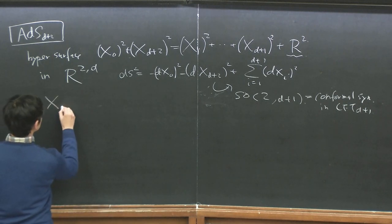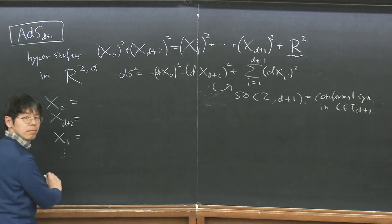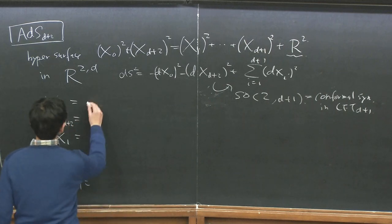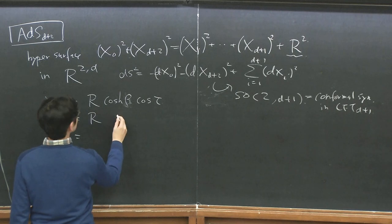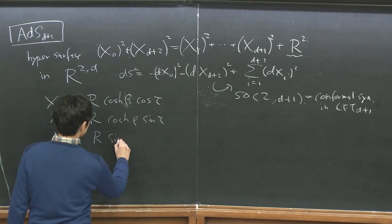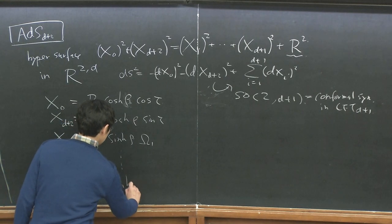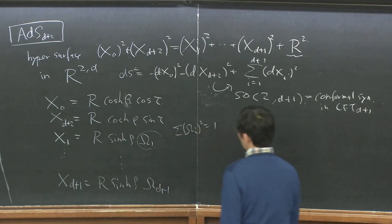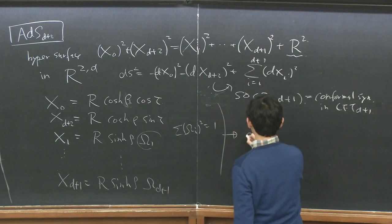We introduce basic coordinates. For global ADS, we parameterize: X^0 = R cosh(ρ) cos(τ), X^1 = R cosh(ρ) sin(τ), and the other directions proportional to R sinh(ρ) times spherical coordinates Ω_i, with Σ Ω_i² = 1. Inducing the metric on this hypersurface gives the well-known global ADS metric with a radial direction ρ, time τ, and S^D sphere.